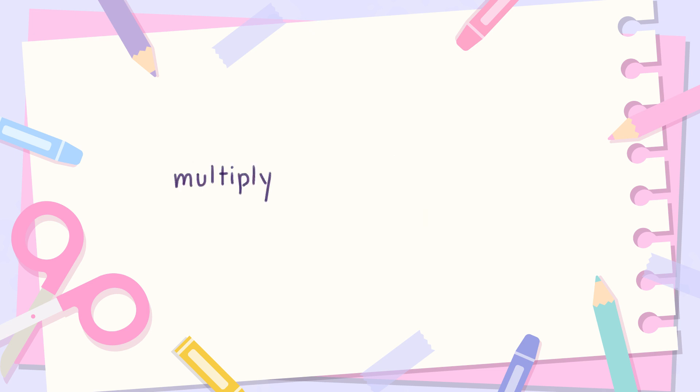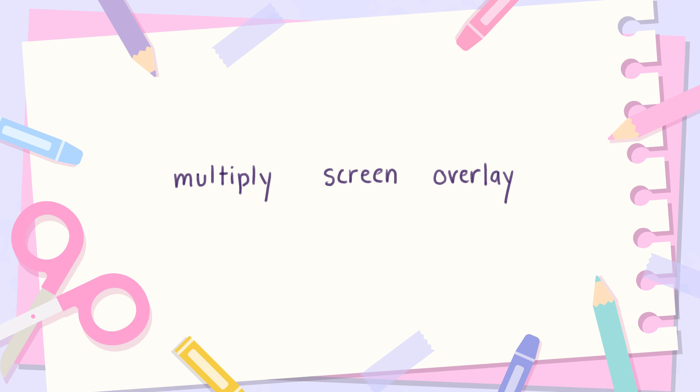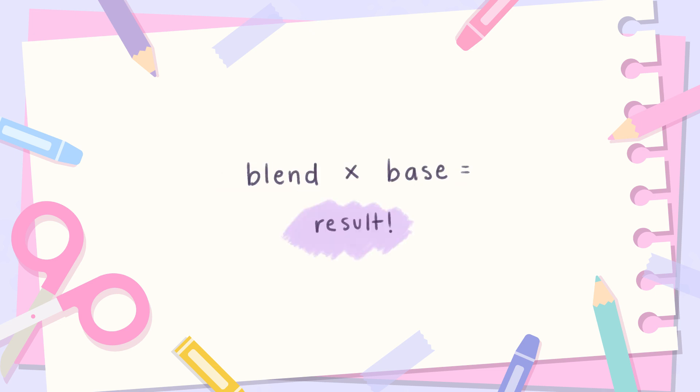The most common blend modes are multiply, screen, and overlay. I'll explain the rest later. Multiply is the one you want to learn the most. Multiply, as the name suggests, multiplies the blend color with the base color. It will always make a darker result color, which makes it perfect for shading.